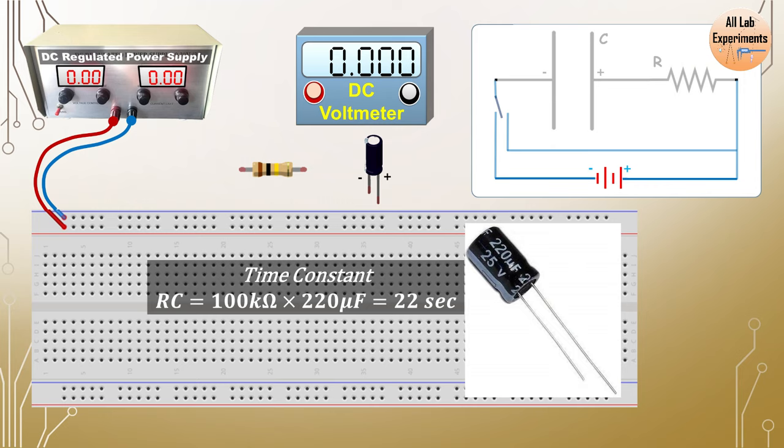And it should not be that high like 400, 500 seconds. In both cases you will face trouble while observing its readings. So this is a good combination and you can choose one like this or close to this.